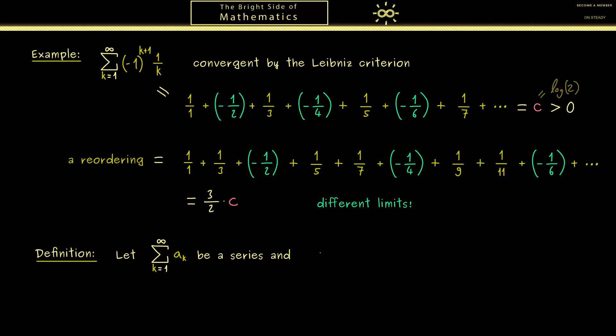For this, let's take a series and a map tau that goes from the natural numbers into the natural numbers and is bijective. The visualization for this map tau is that it is our reordering where we have the old indices on the right hand side and the new indices on the left hand side. For example, the new index 1 could correspond to the old index 3. In the same way, we have similar relations for the other indices. However, the only important thing here is that we have a 1-to-1 correspondence between the old and the new indices, and this is exactly given by the term bijective.